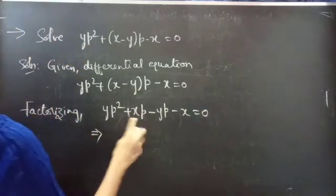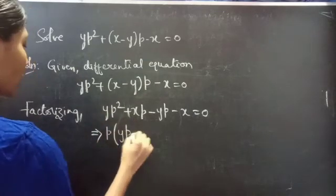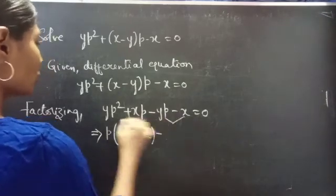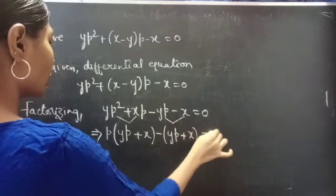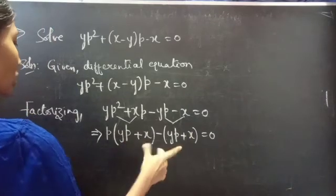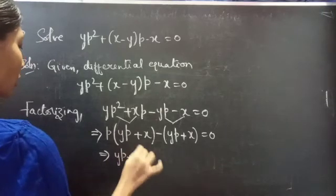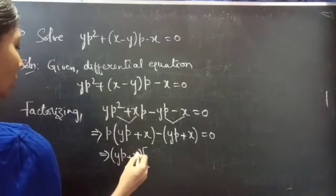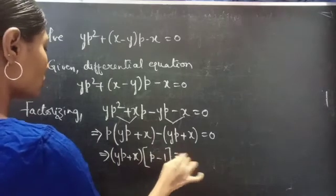Take P common from the first two terms — you will get P times (YP + X). Take minus common from the next two terms — you will get minus of (YP + X) equals to 0. Since YP + X exists in both terms, take (YP + X) common. You will get (YP + X)(P minus 1) equals to 0.